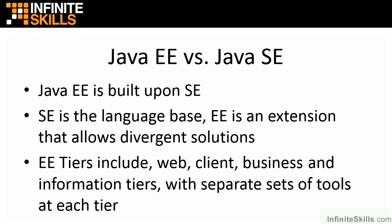There are also information tiers such as our database connectivity and things like that. Each tier has its own separate set of tools, all available to the EE platform, which allows for many different ways to develop applications. Based on the enterprise, different tool sets may be required at different jobs.